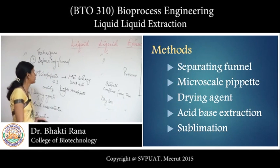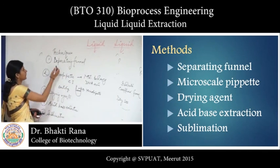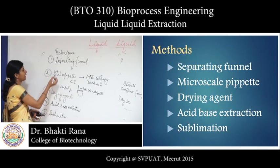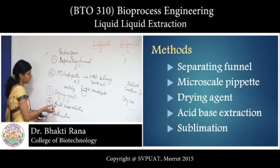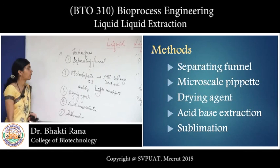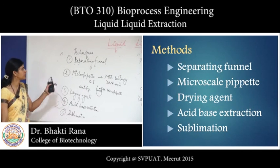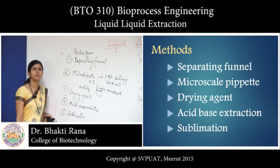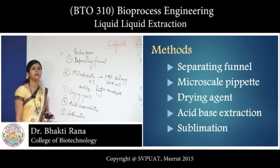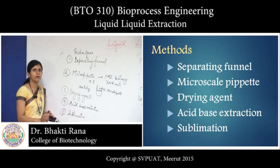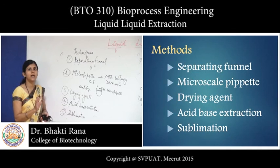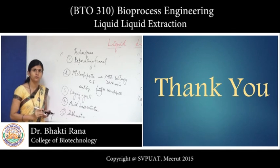So you can use different types of techniques — separating funnel, micropipette, drying agents, acid-base extraction, and sublimation. In the lab, we can use these techniques to extract two different liquids. By applying this technique, we can concentrate our product and remove the undesired liquid from our required form. Thank you.